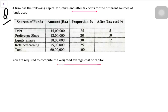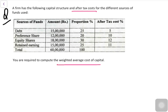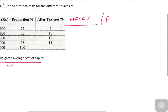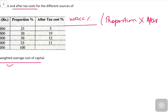You are required to compute the weighted average cost of capital. Trust me, this is a very simple question. To compute the weighted average cost of capital in percentage, what you have to do is multiply the proportion into the after-tax cost.